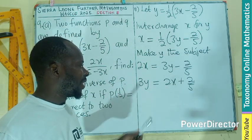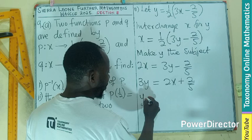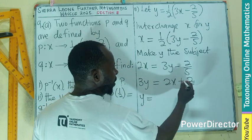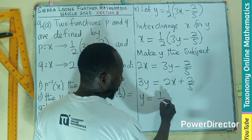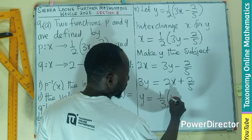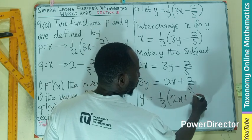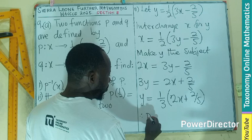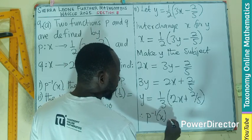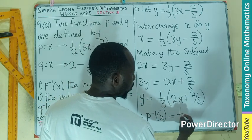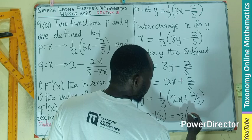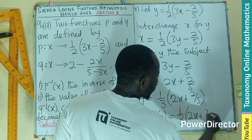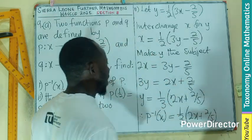The left becomes positive. So I can still say that three Y is the same as two X plus two-fifths. And I am going to divide by three. So Y will be nothing but the whole of this divided by three, which is the same as one-third times two X plus two-fifths.